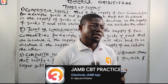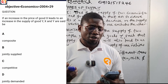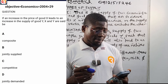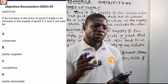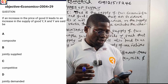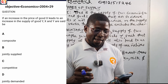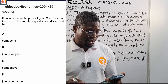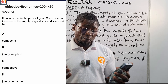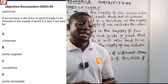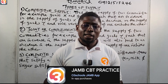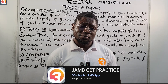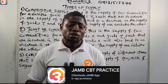Let us look at a sample question from the Old Three Schools app. It's a 2004 question, number 29. Using the question search feature, we searched for 'types of supply' and found this question displayed on your screen: 'If an increase in the price of good X leads to an increase in the supply of good Y, X and Y are said to be — A: composite, B: jointly supplied, C: competitive, D: jointly demanded.' We'll come back to this question at the end of class.